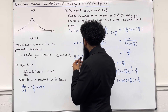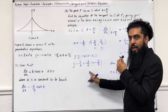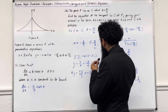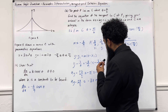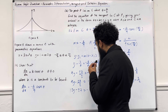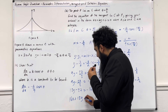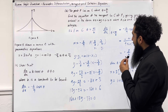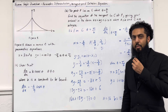Substituting the values: y minus 3 over 2 equals minus 8 over 9 times x minus 3 over 8. Multiply the entire equation by 9: 9y minus 27 over 2 equals minus 8 lots of x minus 3 over 8, expanding to minus 8x plus 3. Multiply everything by 2: 18y minus 27 equals minus 16x plus 6. Taking everything to the left-hand side: 16x plus 18y minus 33 equals 0. That is the equation of the tangent to C at P, where A equals 16, B equals 18 and C equals minus 33. This completes part B.